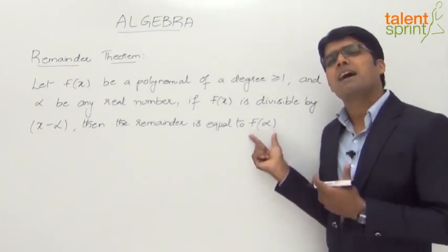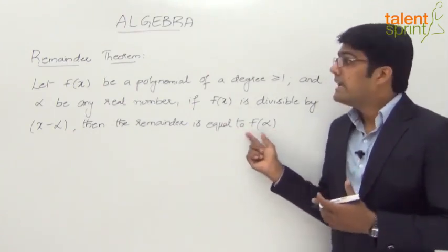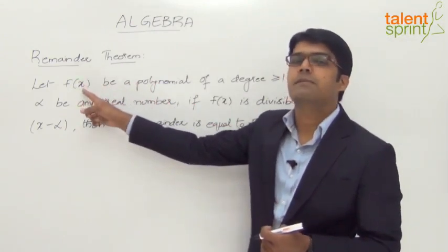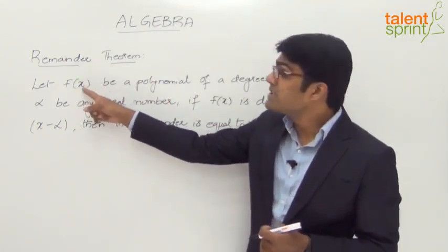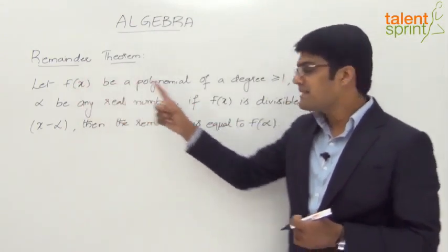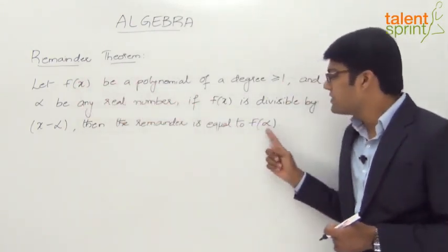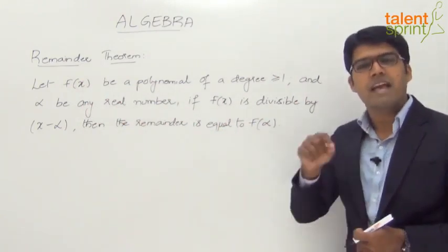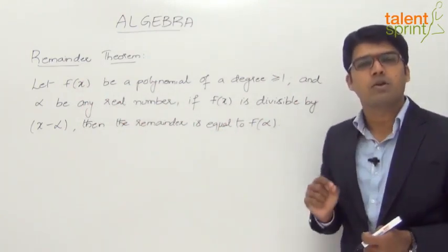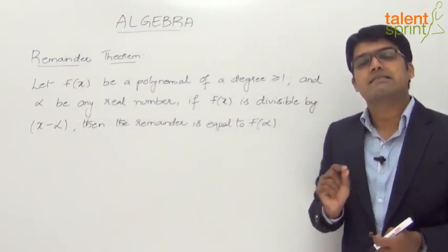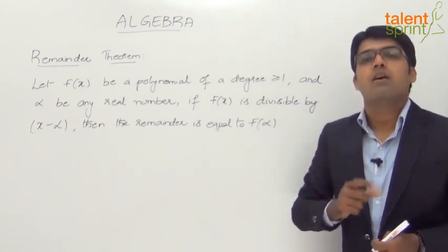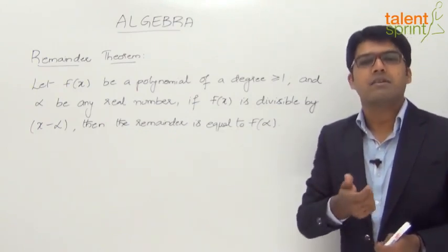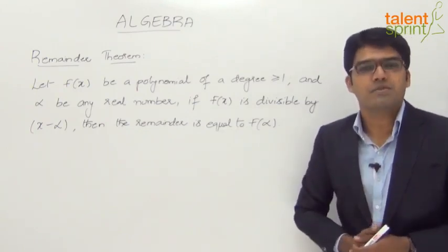Now, what is meant by f of alpha? f of x is the polynomial where x is the variable. In place of the variable x, we need to substitute the real number alpha. So wherever we have x in the polynomial, just replace that with the number alpha. Whatever simplification we get, that number is going to be the remainder.